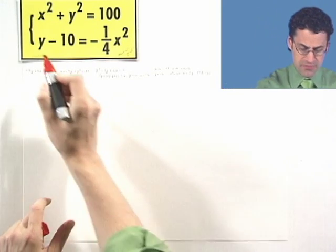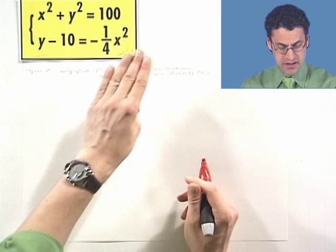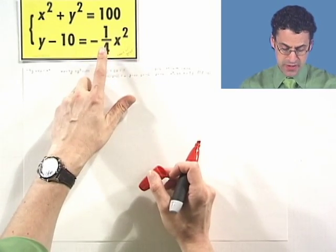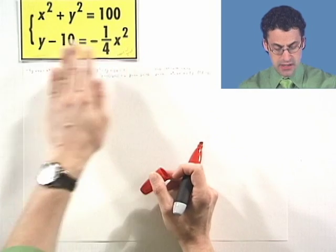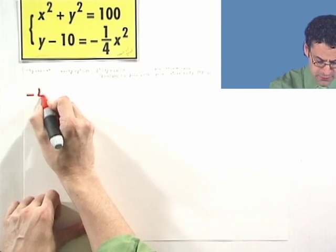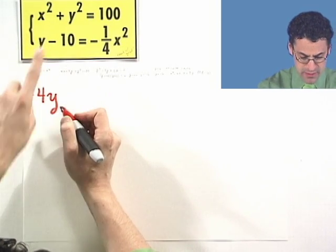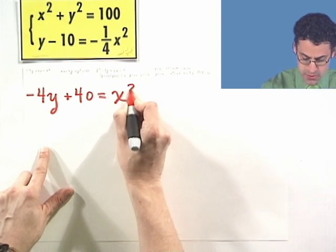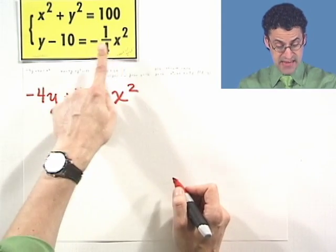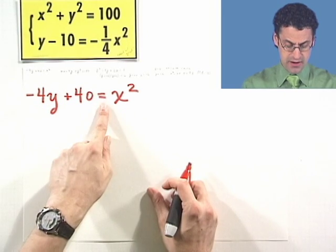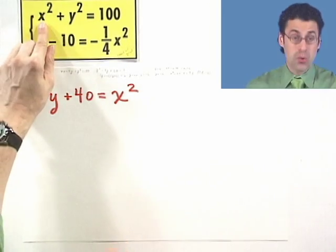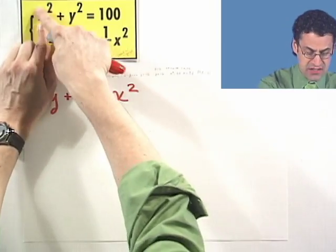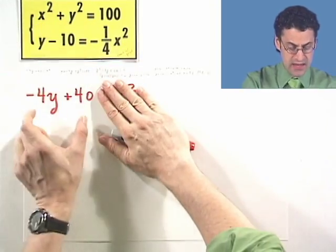The first step is to solve the second equation for x squared. I multiply both sides by negative 4, because that undoes the multiplication by negative 1 fourth. So I get negative 4y times negative 4, giving plus 40, and that equals x squared. Now the second equation is equivalent to x squared equals negative 4y plus 40. And since the first equation also has x squared, I can replace that x squared with its equivalent expression.